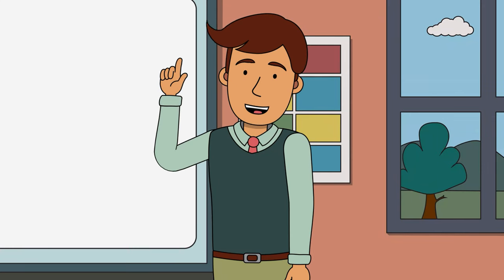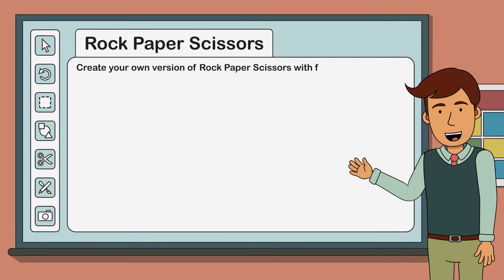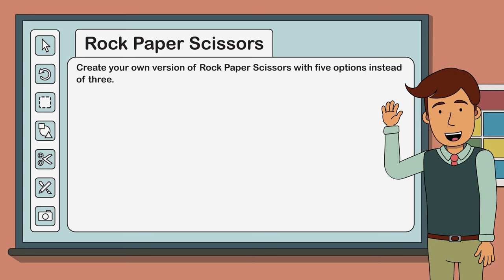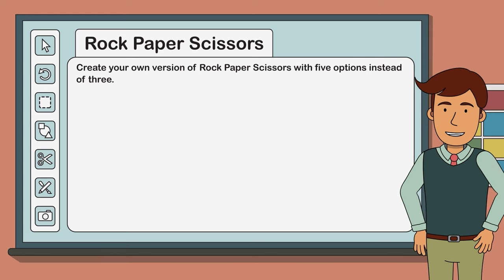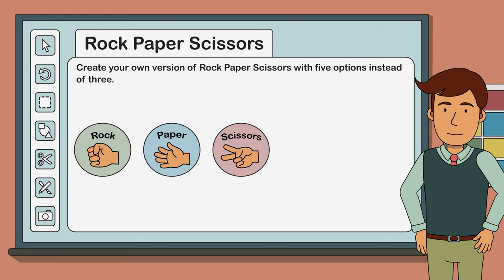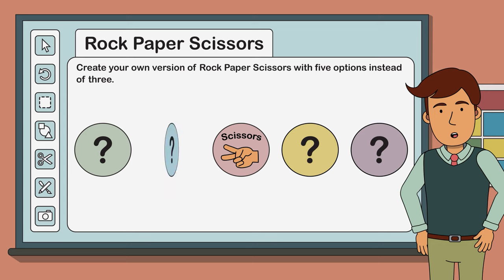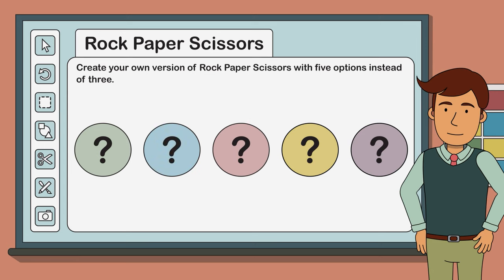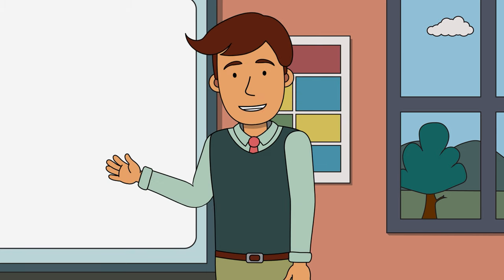But what if we were to supercharge rock, paper, scissors? Your task today is to create a version of the game which has five hand gestures instead of three. The easiest way to do this is to keep the three traditional hand gestures — rock, paper, scissors — and add two new gestures of your own creation. But if you're feeling particularly adventurous, you may decide to create five completely new hand gestures. The catch is, your five-option version needs to be as fair as the original game.